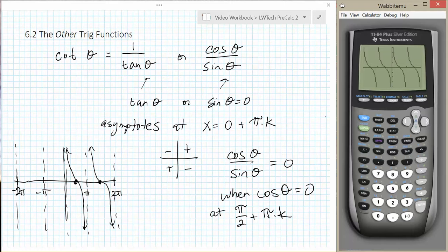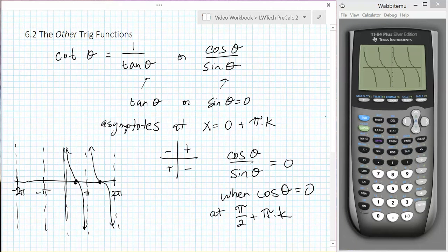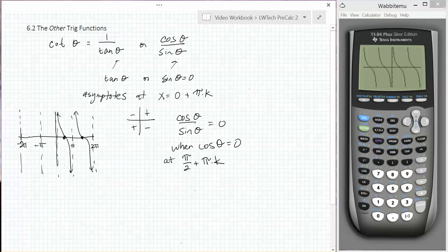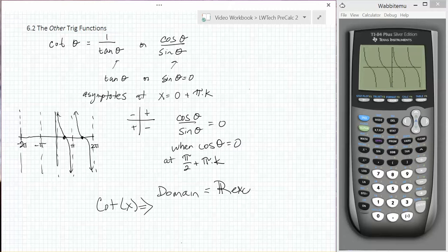The domain. The domain of our cotangent is all real numbers except 0 plus pi k. That's where our asymptotes are.